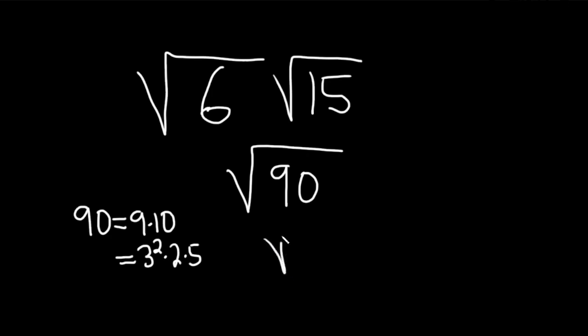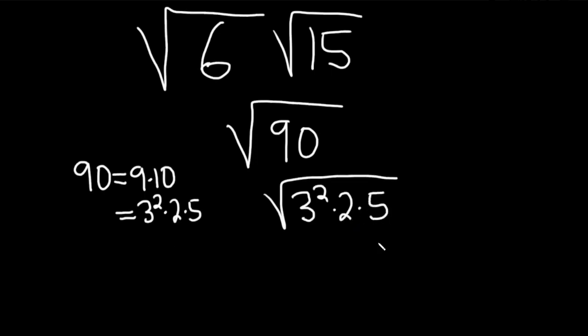Now we can write this as the square root of 3 squared times 2 times 5.